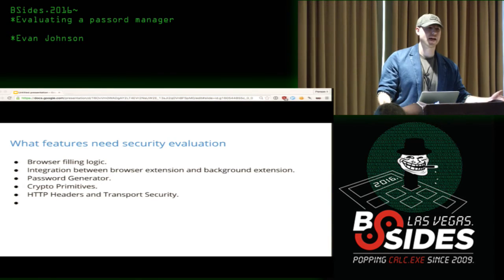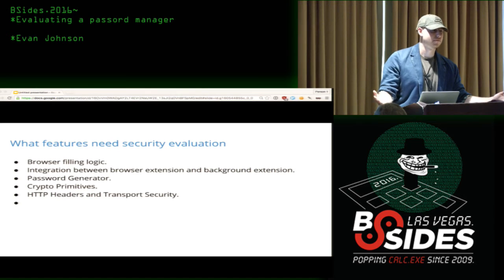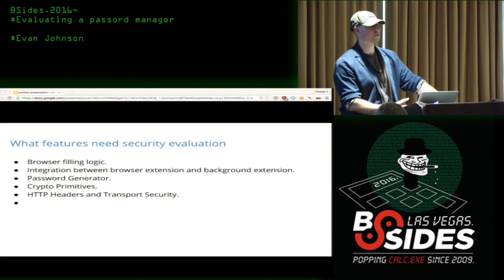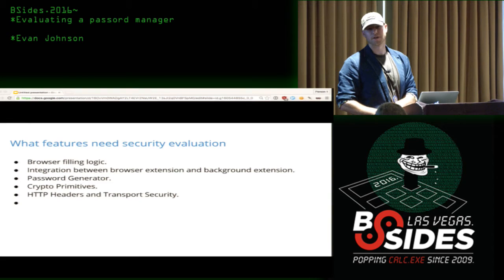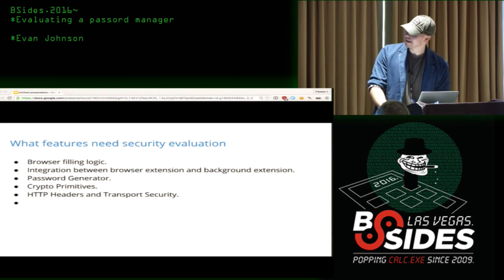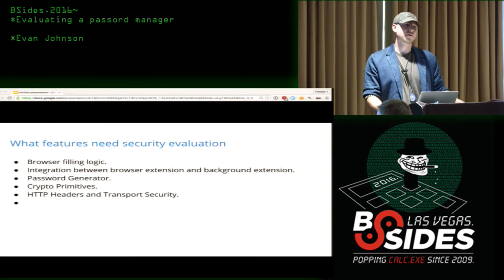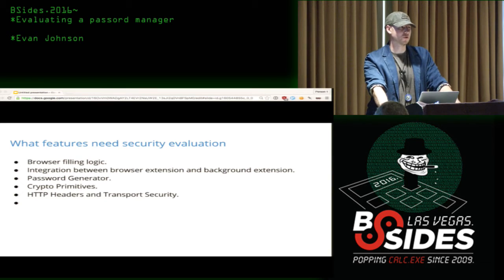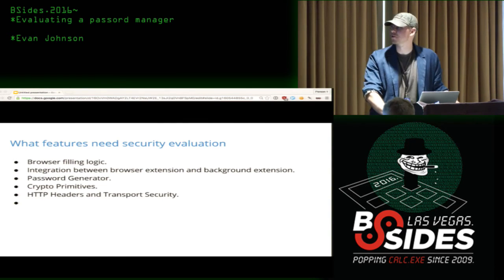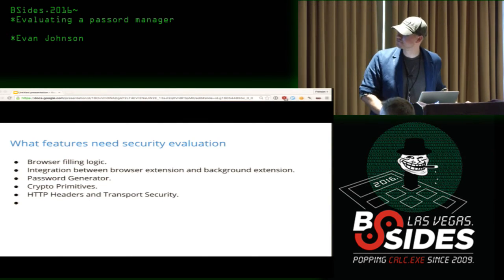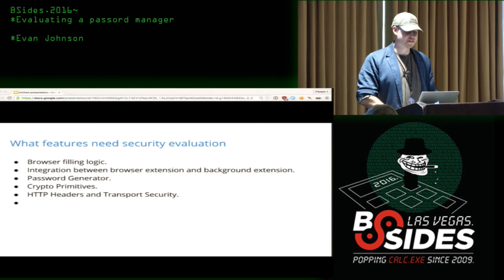In Dashlane and 1Password, the UI and backend talk over a WebSocket. Different password managers have different software architectures — some are more monolithic and extension-based, while others rely on a thick client on your machine. Crypto primitives are also a concern: all this came from the browser world, and crypto primitives don't exist that well in JavaScript, so basically everybody copies and pastes the crypto primitives they need. Then there are HTTP headers and regular app sec things to evaluate.